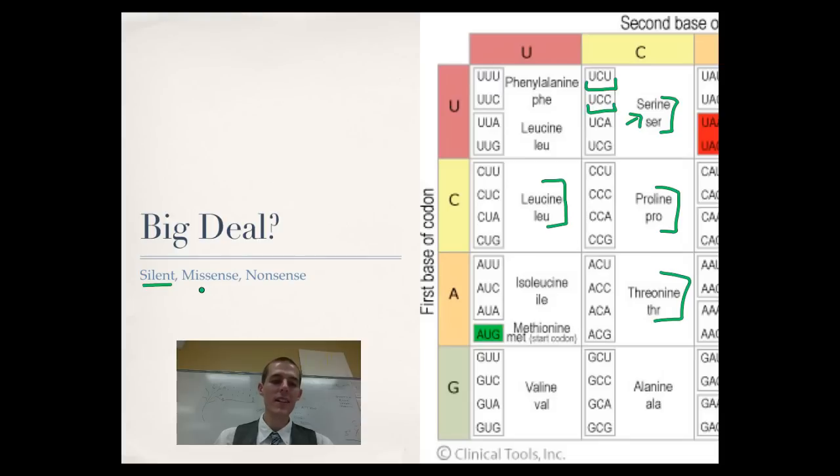A missense mutation is one that changes a single base or not a single base, a single amino acid. So back on the last slide, I talked about sickle cell anemia, changing glutamine to valine. That is a missense mutation.